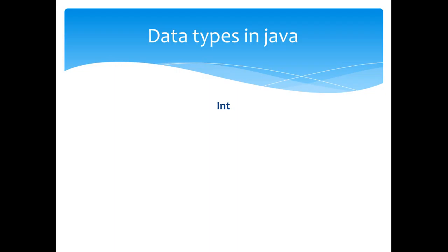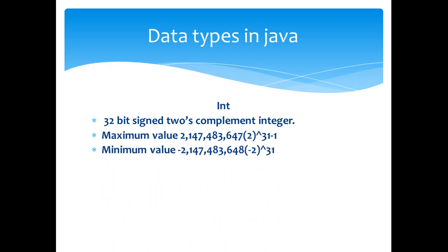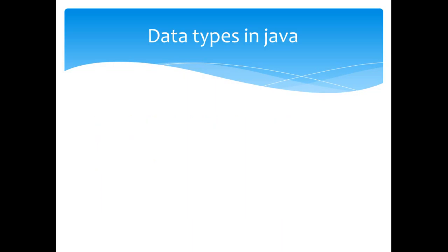The next type is int. It is a 32-bit signed two's complement integer. The maximum and minimum values are shown here. The default value of integer is 0. Example: int x is equal to 32, int y is equal to minus 32.